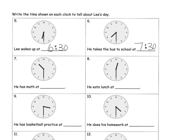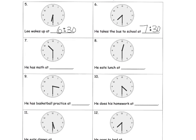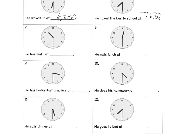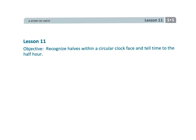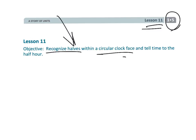Use your logic to figure out what time each clock shows. That wraps up 1st Grade, Module 5, Lesson 11 — using halves to tell time to the nearest half hour.